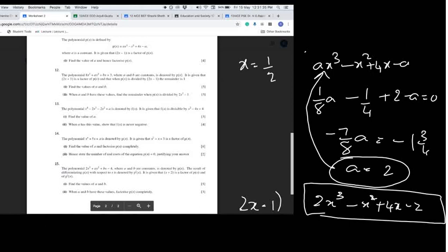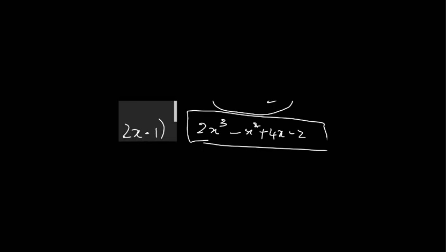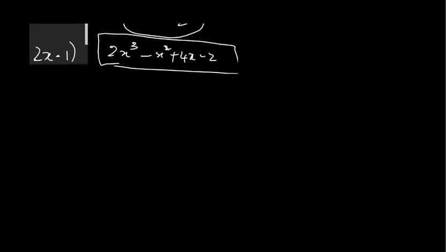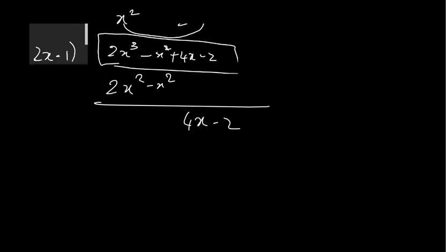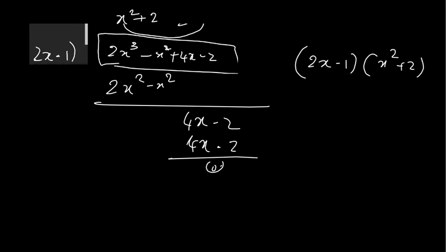We are doing the long division now. You get 2, it's x squared, so you get 2x cubed minus x squared. Both are gone, you got 4x minus 2, so 4x minus 2 plus 2 times gives you 4x minus 2 equal to 0. So the other factors are 2x minus 1 and x squared plus 2 — this is one factor, this is the other.